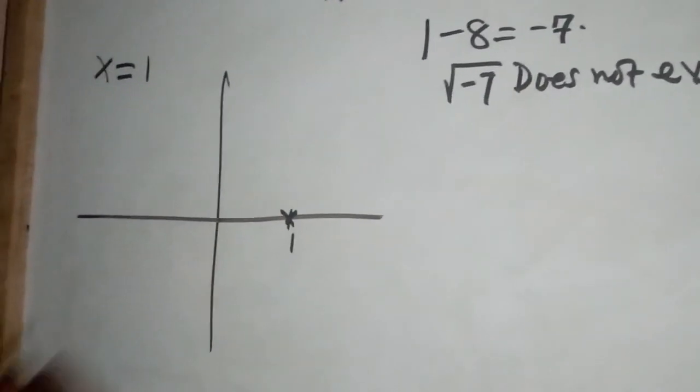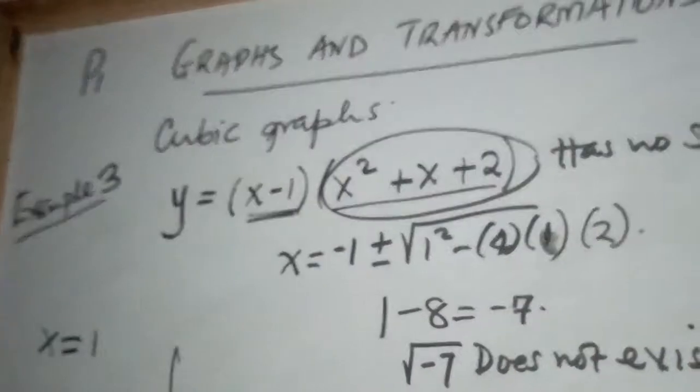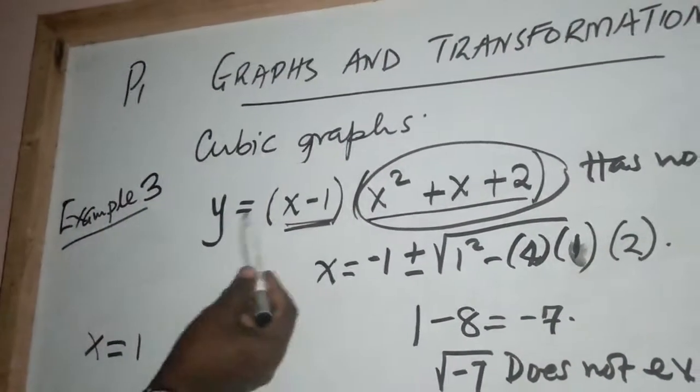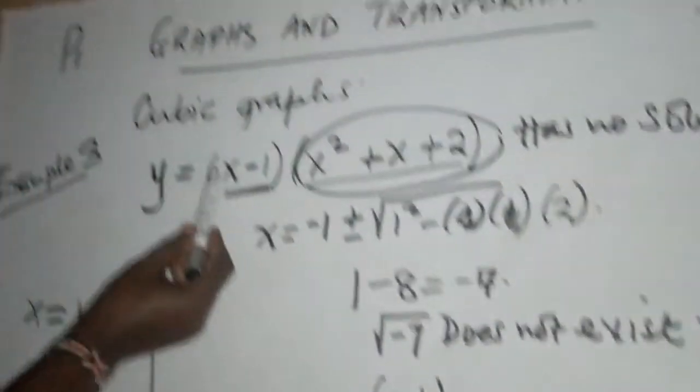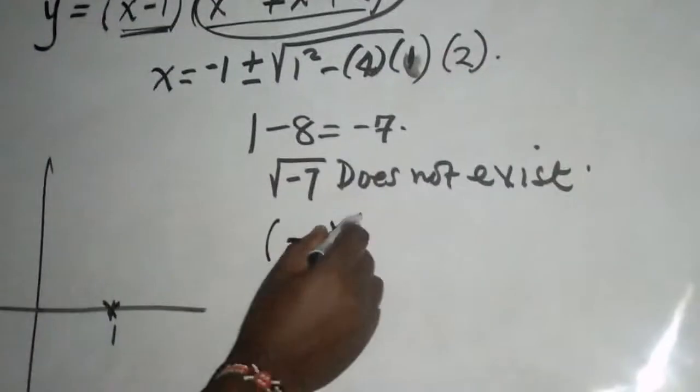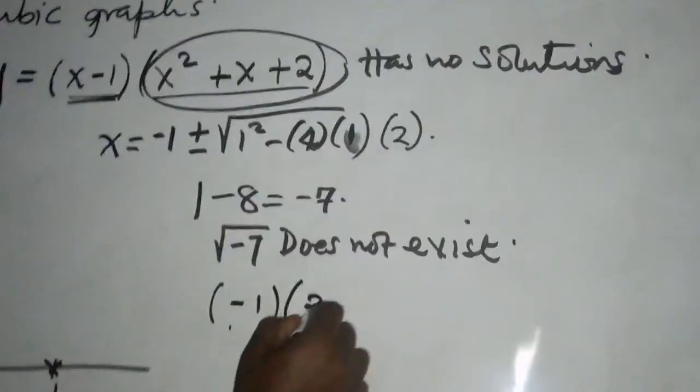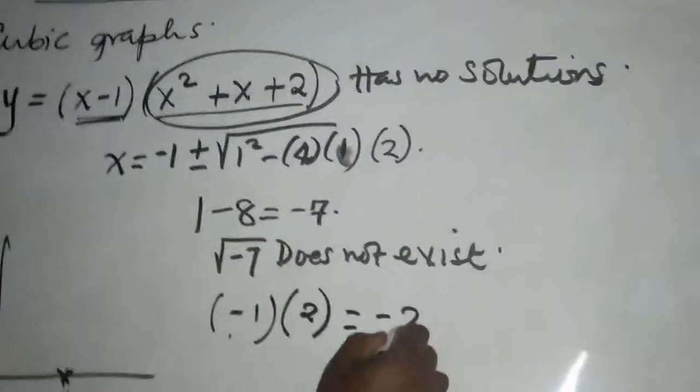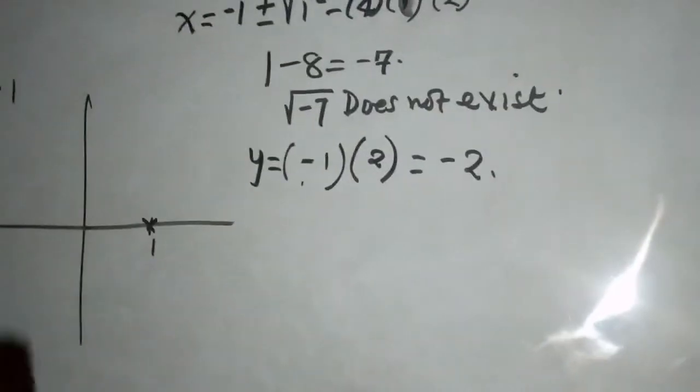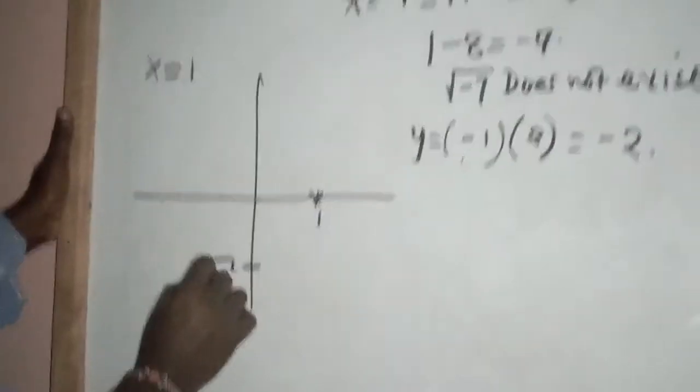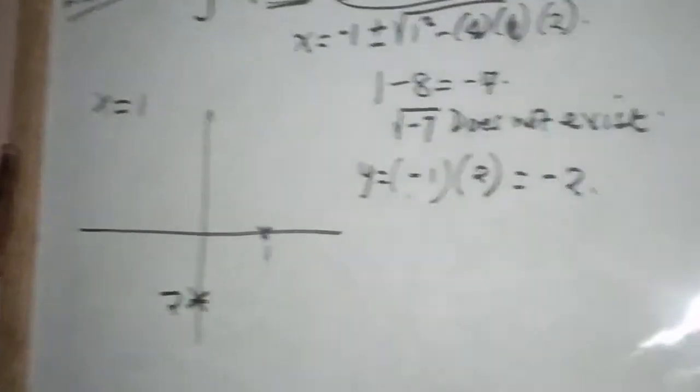The graph cuts the y-axis when x itself is equals to zero. So we have negative one in the first bracket, zero, zero, two in the second bracket, and it cuts the y-axis at negative two. So that is another point through which the graph passes.